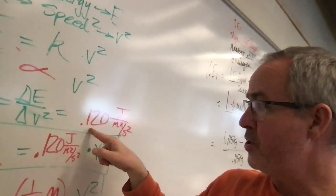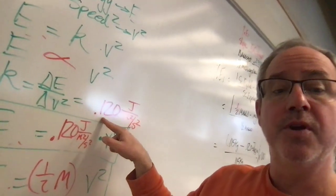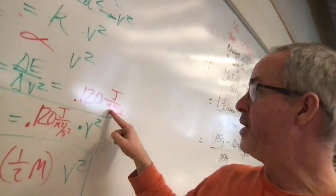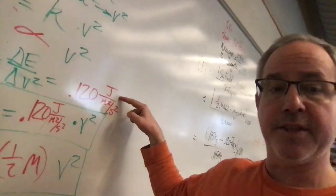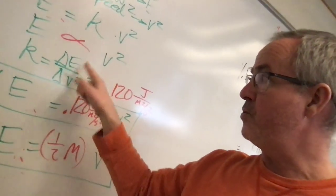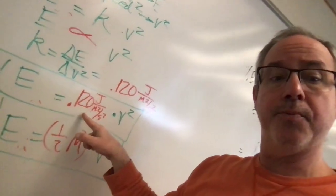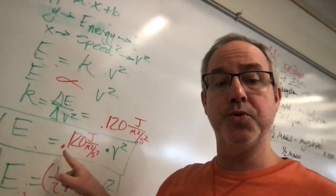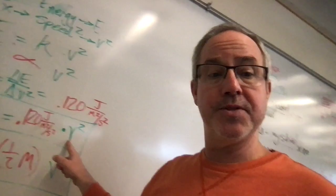I had a sample version that had a slope of 1.20 joules per meter squared per second squared, double check the units on that to make sure that those are correct for you, and now we've got the energy is equal to the slope, that constant slope of 0.120 joules per meter squared per second squared times the speed squared.